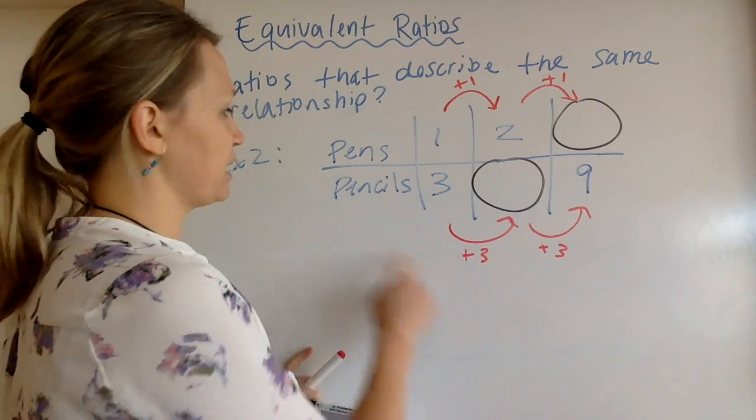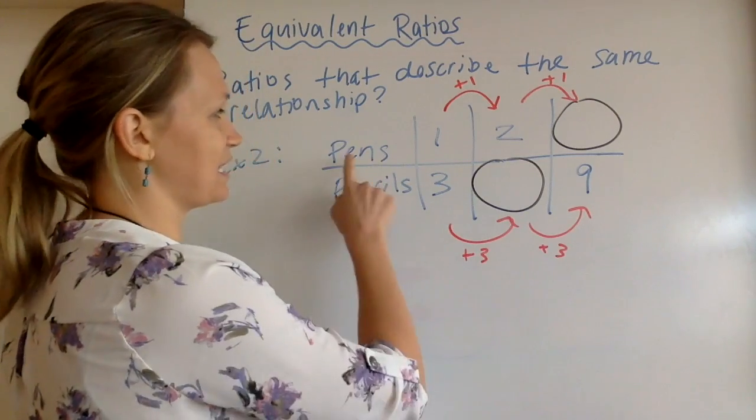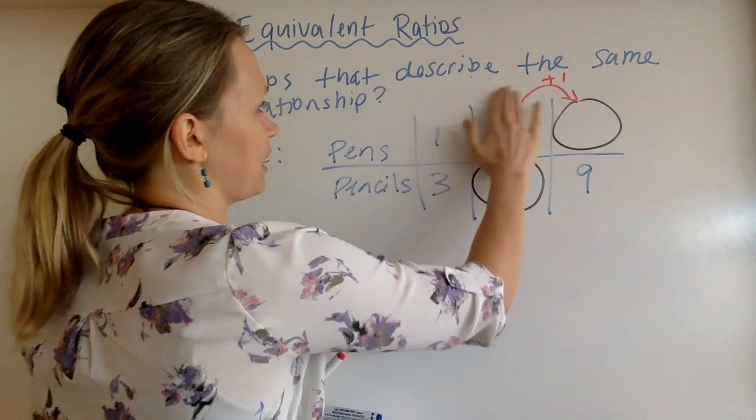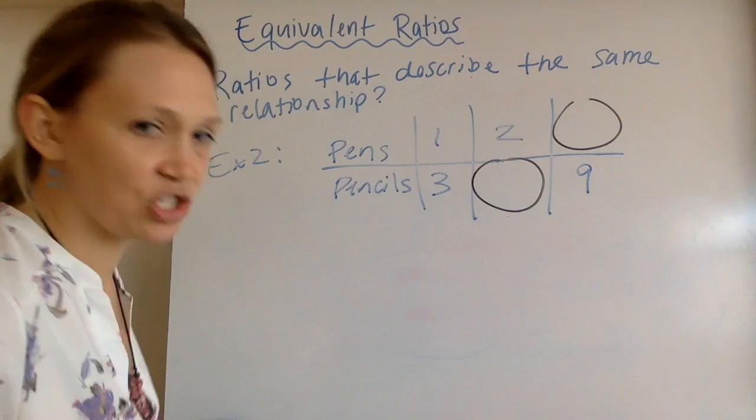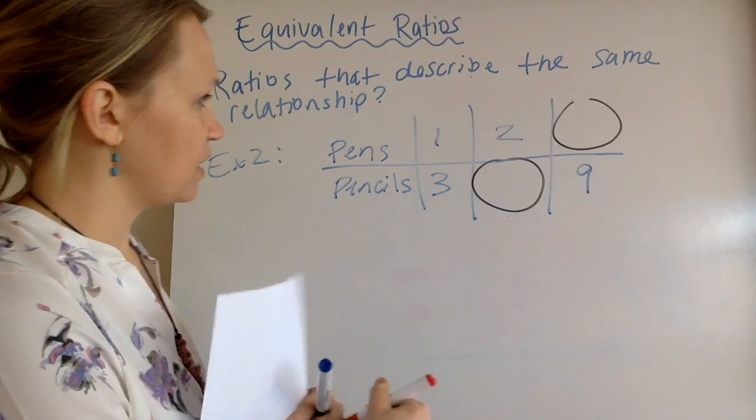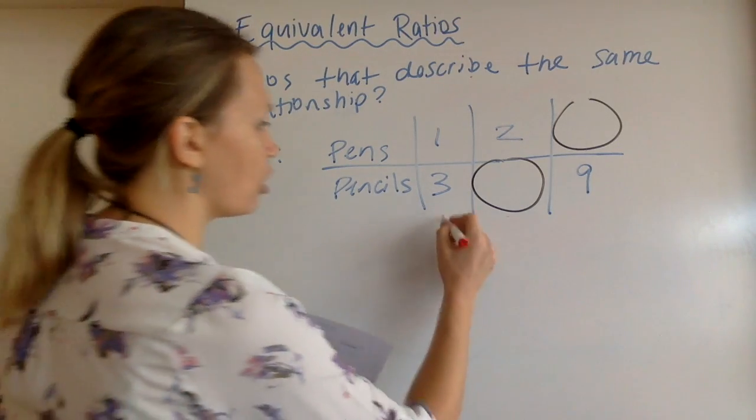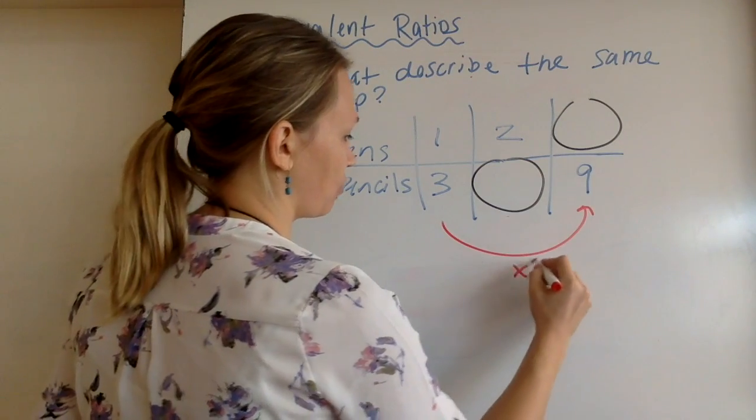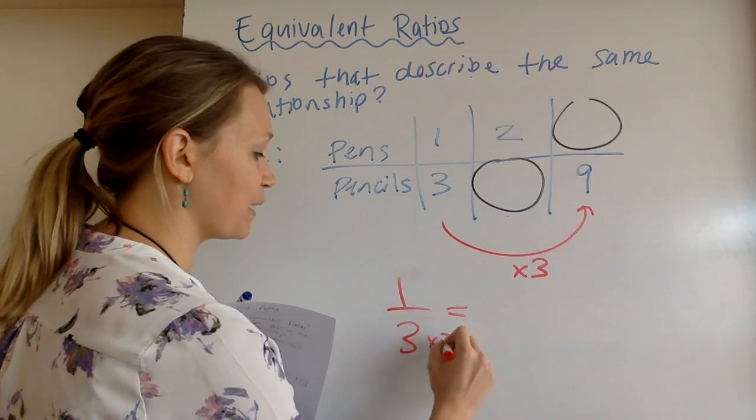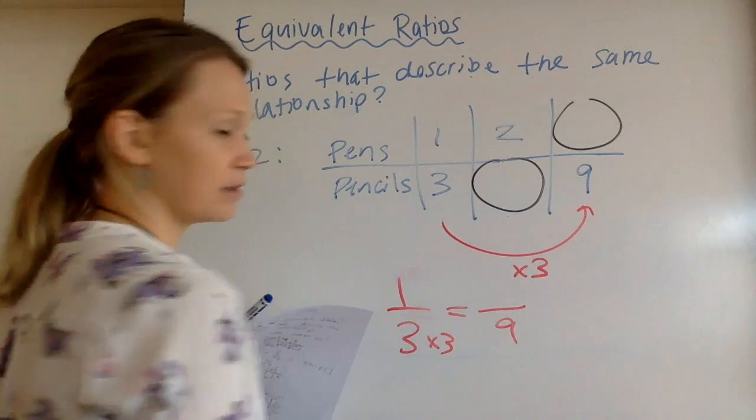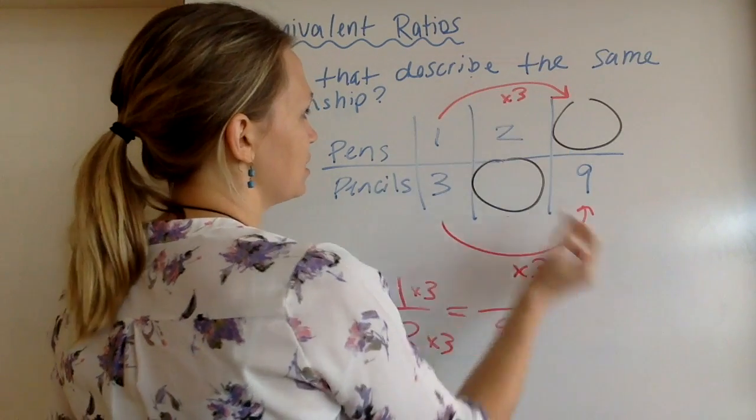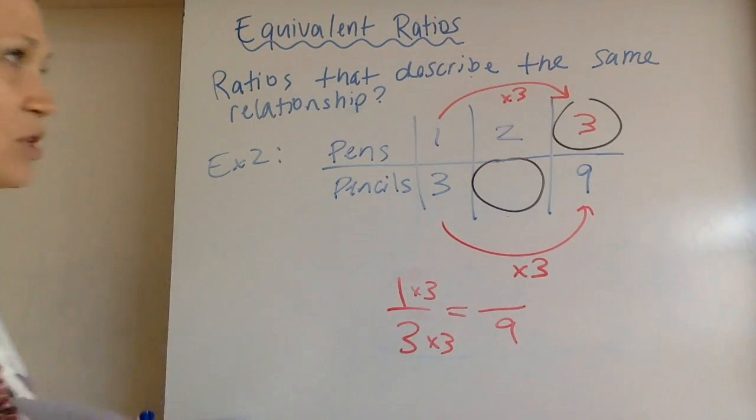So you could think of a repeated addition to find your mystery numbers. But just so you notice, what the pencils get added by is not the same as what the pens get added by, which tends to confuse some students. And that's why I like the multiplication form better. How can you use multiplication to figure out what these mystery numbers are? Maybe I multiplied three by three to get nine. Well, since these are equivalent ratios, and I'm multiplying three by three to get nine, I also have to multiply the top by three. So one times three is three, and that's how I can figure out my mystery number there.